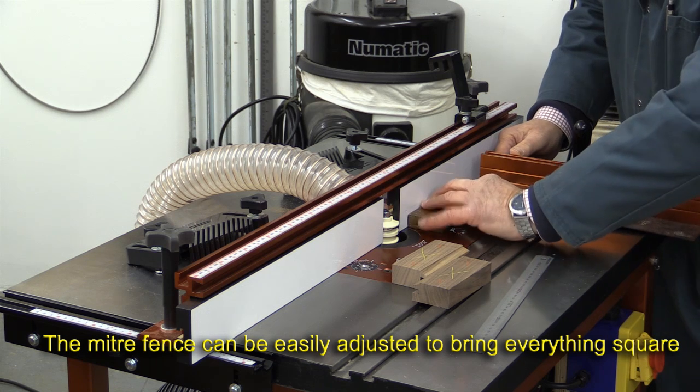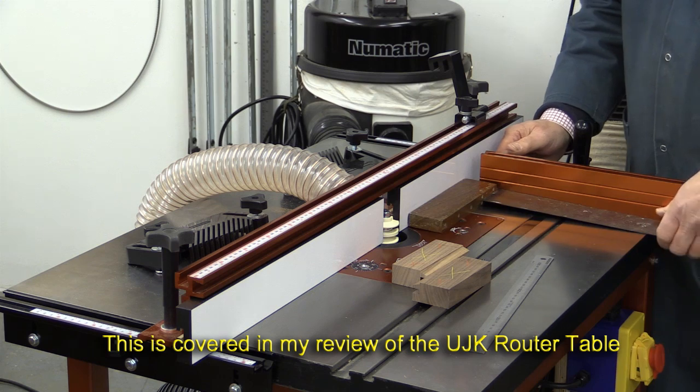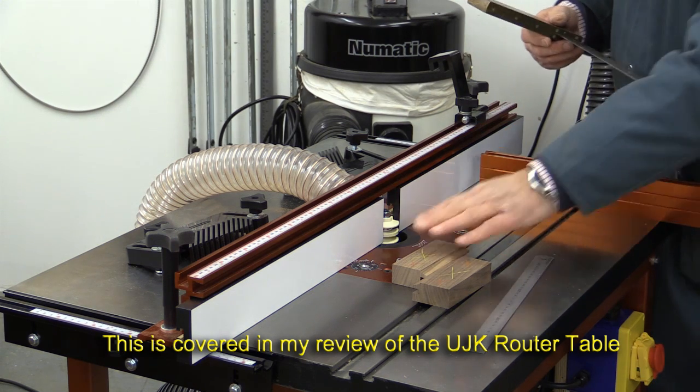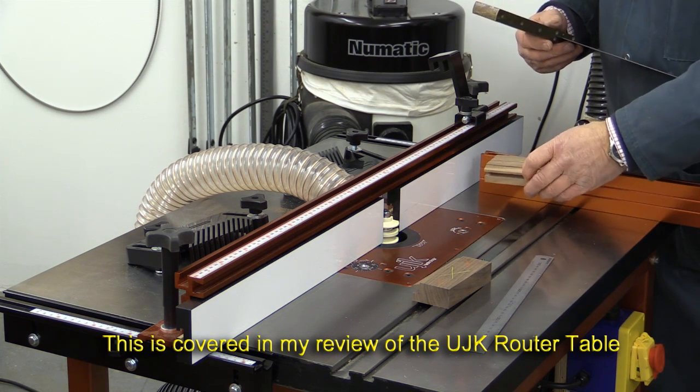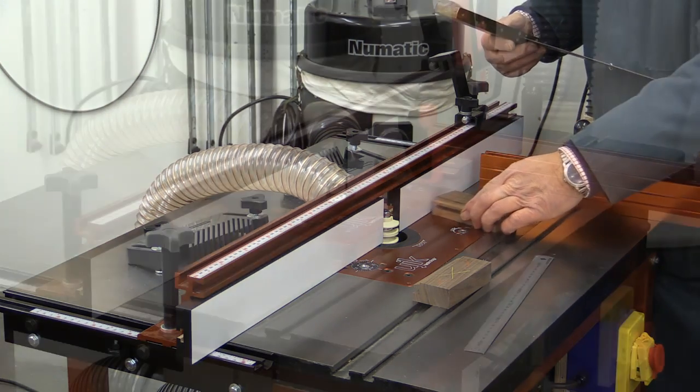The second bit, which is jolly important, is to make sure that the mitre fence is running at right angles to the fence here. And I'm just checking mine. And it is a tiny smidgen out. And the problem is, if it is out, then this fence here, the mitre fence, will be presenting the work at an angle.